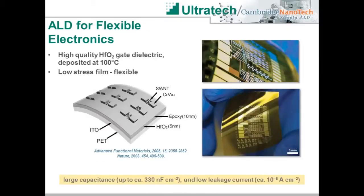Flexible electronics is seeing widespread interest lately. The work described in this paper demonstrates functioning electronics on a flexible polyethylene terephthalate, PET, substrate. Due to PET material properties, processing temperatures are limited to 100°C. ALD enabled the deposition of a 5 nanometer thick hafnium oxide film at 100°C that imparted the required gate dielectric properties, but due to the ALD film thinness also possessed sufficient flexibility to be compatible with the overall flexible structure without degradation from moderate bending stresses.